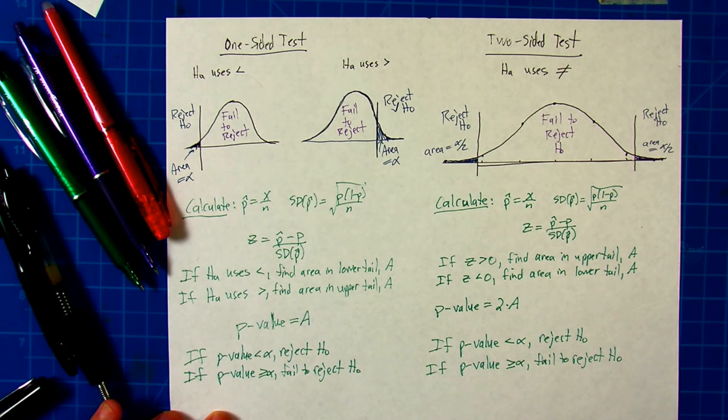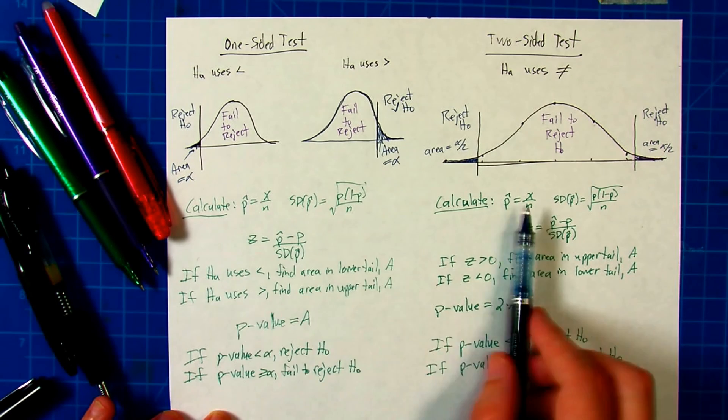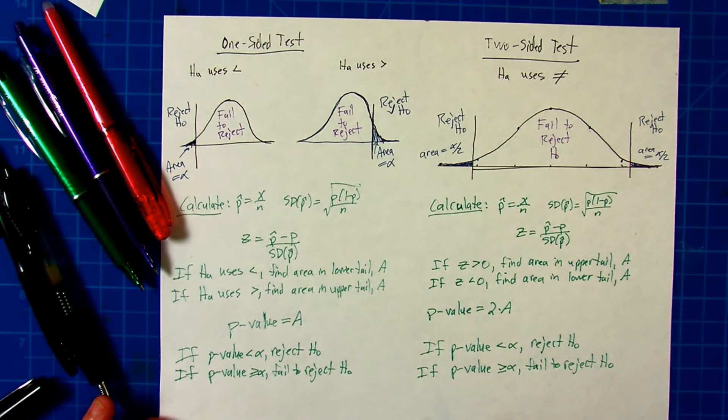You probably noticed the most important thing, then, is to get the alternate hypothesis correct, because if you don't get that right, you can't possibly know which area you're looking at, the upper or lower tail, whether you need to double it, and then you can't make the right conclusion from there.